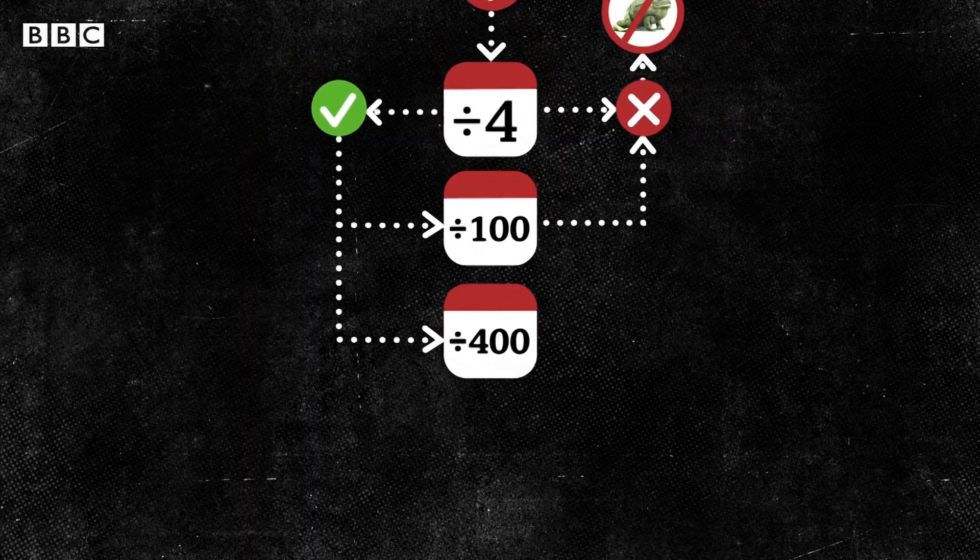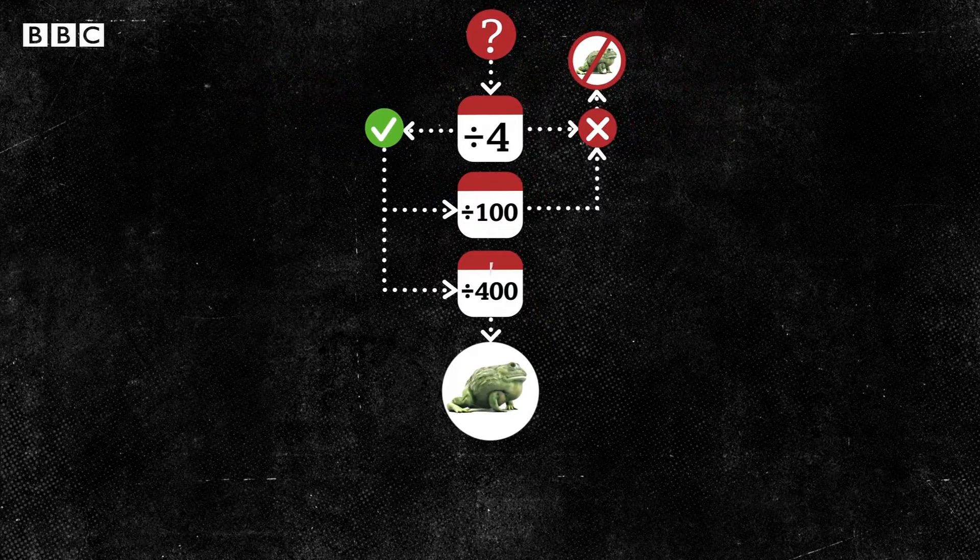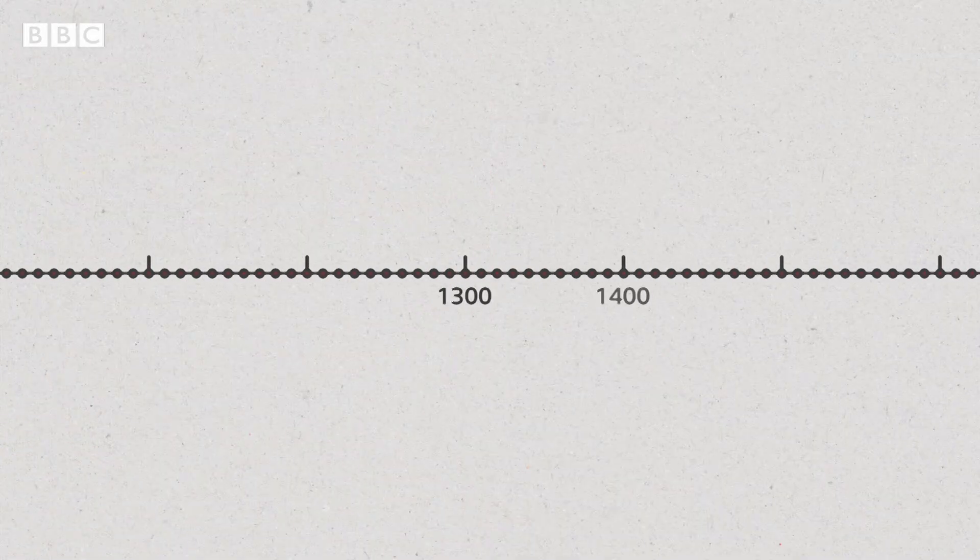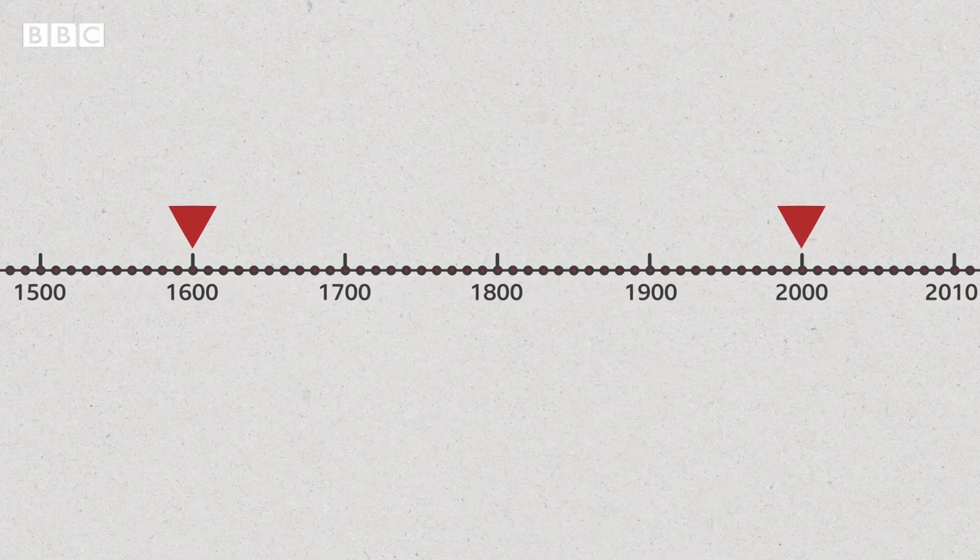If a leap year can be divided by 400, the leap day is added after all. That's why a leap day happened in the year 1600 and 2000, but not in 1700, 1800 or 1900.